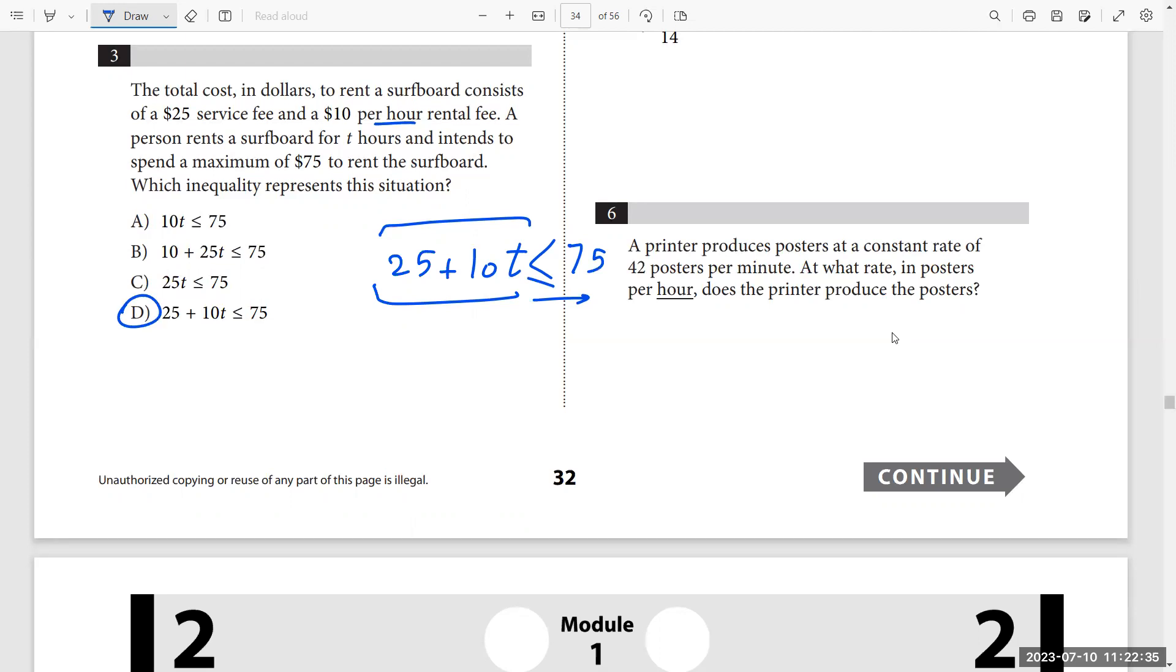Question six. The printer produces posters at a constant rate of 42 posters per minute. At what rate in posters per hour does the printer produce the posters? This is the rate 42 posters per minute. I want to calculate in hour, so just multiply 42 times 60 because I want the amount to produce the posters in one hour per hour. So just multiply 0, 6, 7, 2, 12. And 6, 7, 4, 24. 24 plus 1, 25. This is the answer, 2520.